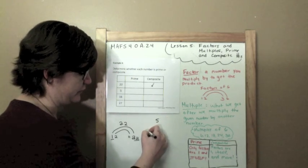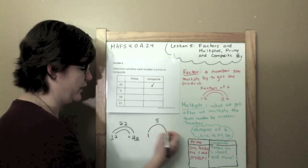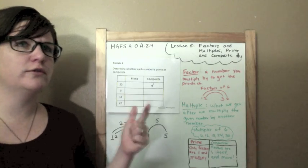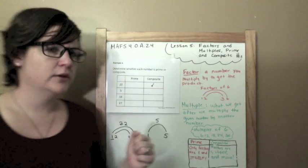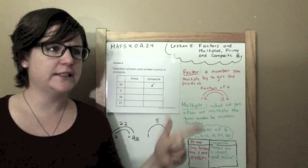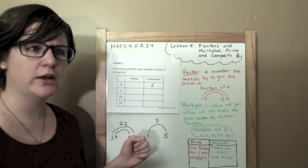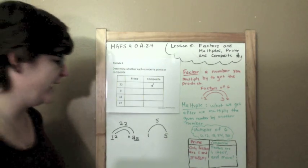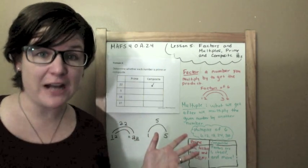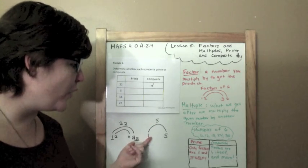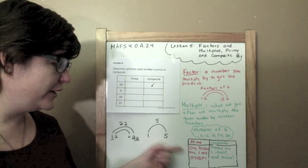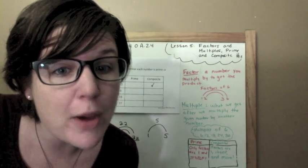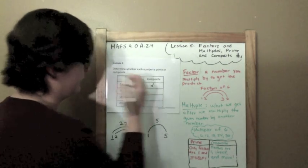All right, let's try 5. Let's find the factors of 5. Let's start with 1 times 5. Okay, let's try 2. 2, 4, 6, nope. Let's try 3. 3, 6, nope. Let's try 4. 4, 8, nope. And the last one will be 5, which we already have. So, the only factors of 5 are 1 and itself. The only factors of 5 are 1 and itself. What does that make it? Primo. Not composite.